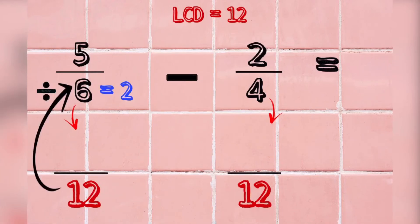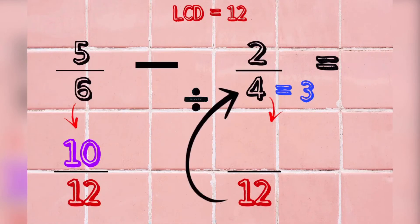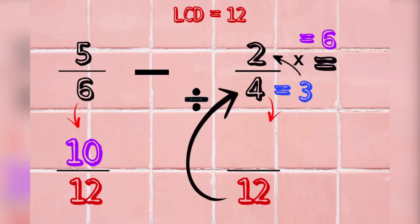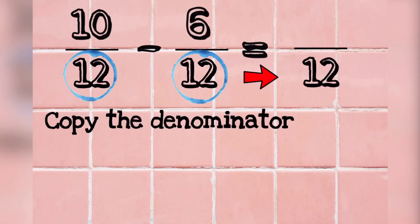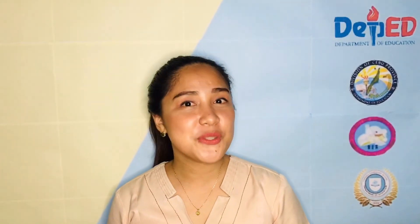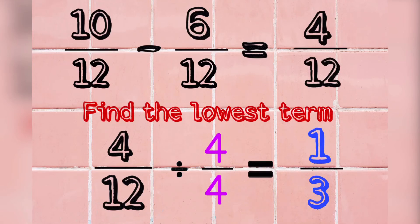12 divided by 6 is 2. 2 times 5 is 10. 12 divided by 4 is 3. 3 times 2 equals 6. Then, we subtract the numerators 10 and 6 equals 4. Then, copy 12. 4 twelfths is not in its lowest term, and it can still be simplified using the common factor 4, making it into one-third.